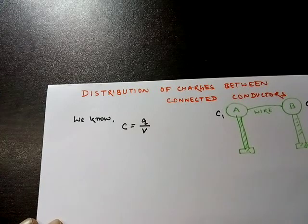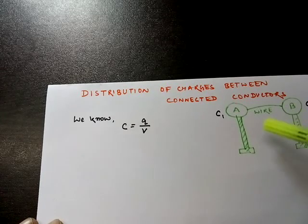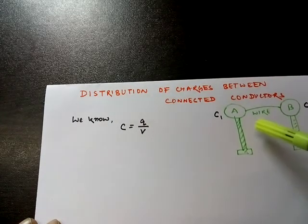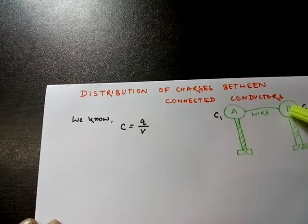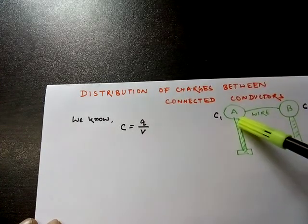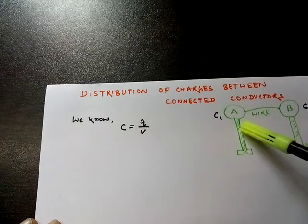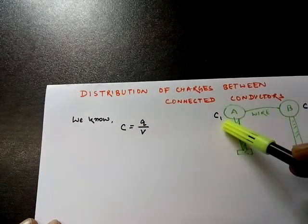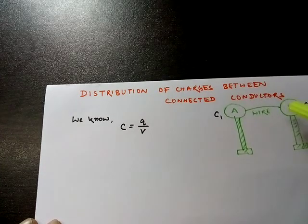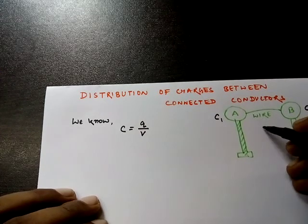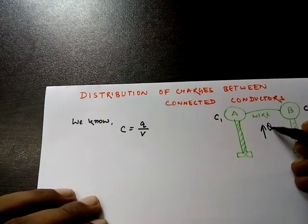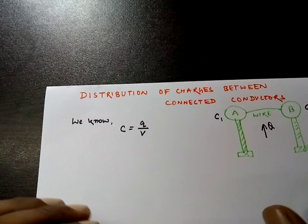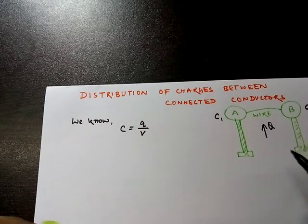Let's start. Initially, I'm assuming that conductor A and conductor B are connected by a wire and are initially uncharged — so there is no charge. Conductor A has capacitance C1, conductor B has capacitance C2. Now, if a charge Q is given to the system, it will distribute the charge Q among themselves.